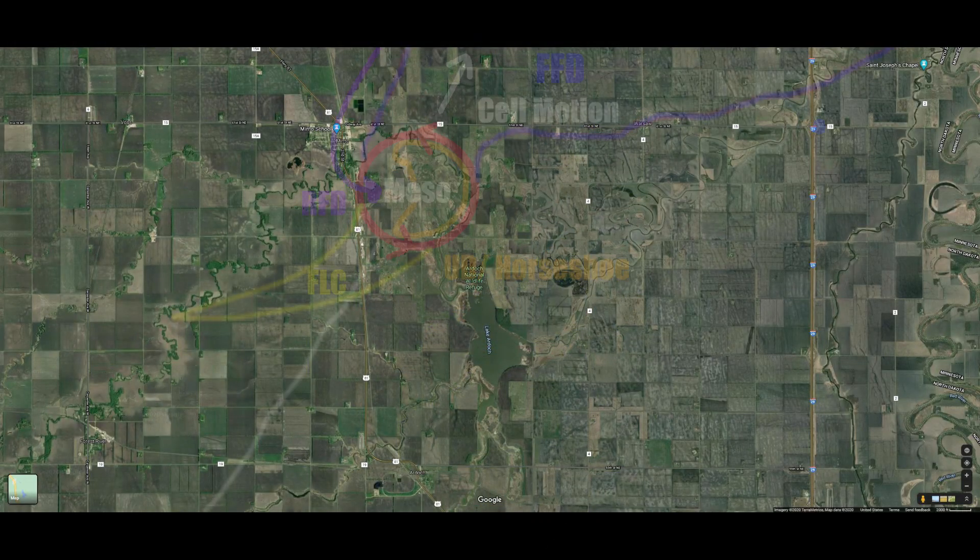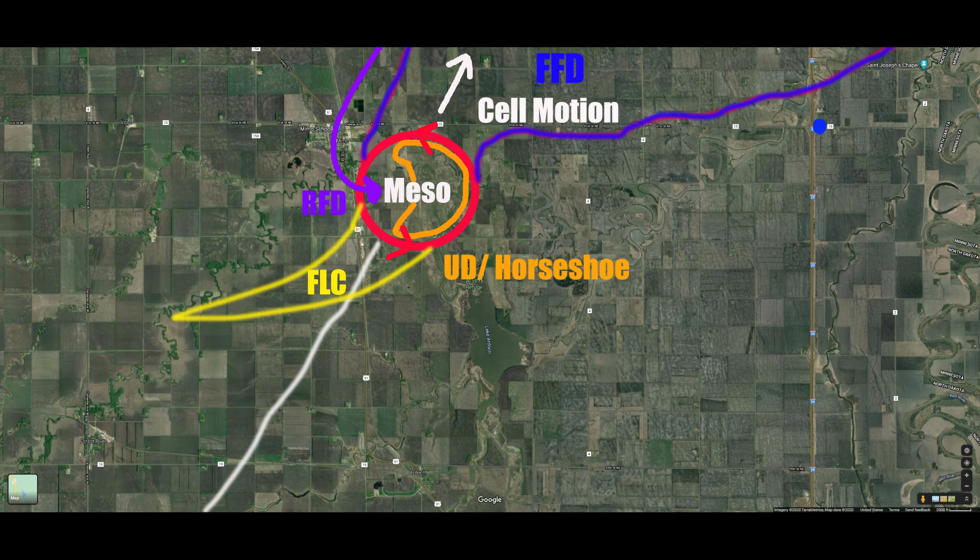Here I've overlaid my position and the approximate location and size of each of these features on a satellite map of the area at the time that picture was taken. We are the blue dot sitting in the upper right corner looking west, approximately three and a half miles from the mesocyclone. If the storm produces a tornado, it is most likely going to be on the north side or upper side of that horseshoe-shaped updraft base.